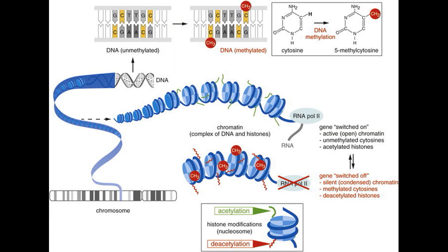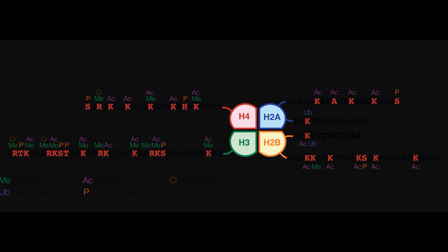The main mechanism controlling the degree of compactness of the DNA is the modification of histone tails by the addition or removal of chemical tags by enzymes. For example, the addition of acetyl groups to the 27th amino acid lysine in the tail of histone H3 induces more open and accessible chromatin, while adding three methyl groups to the same residue has the opposite effect, closing the chromatin.